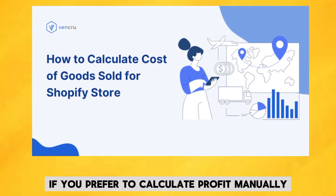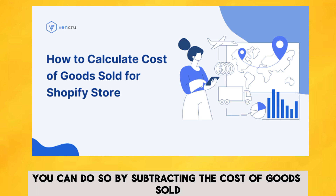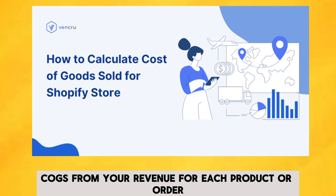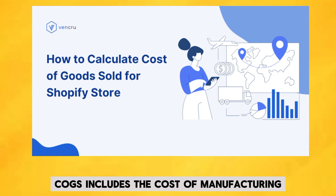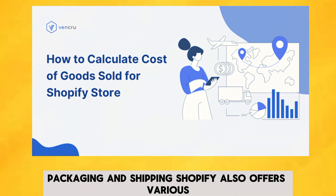If you prefer to calculate profit manually, you can do so by subtracting the cost of goods sold from your revenue for each product or order. COGS includes the cost of manufacturing, packaging, and shipping.